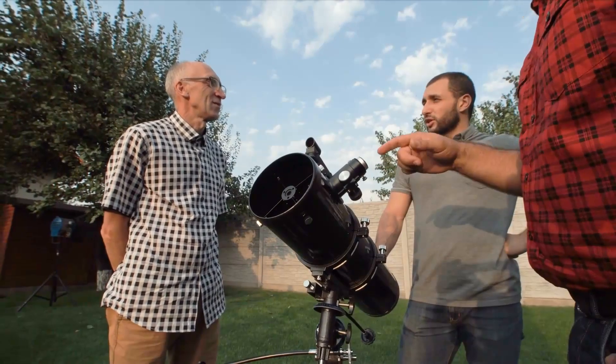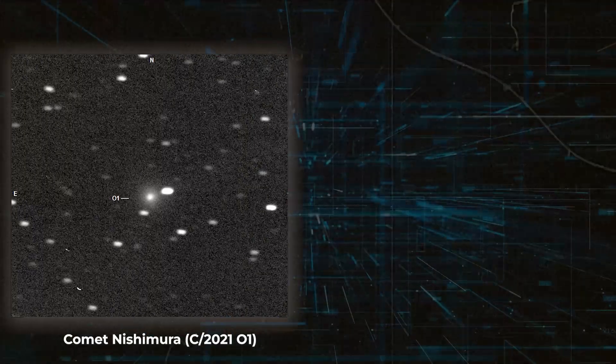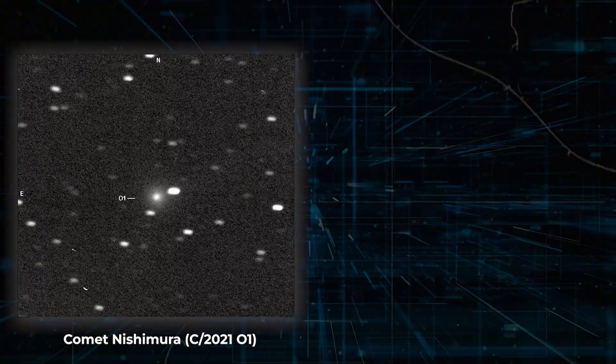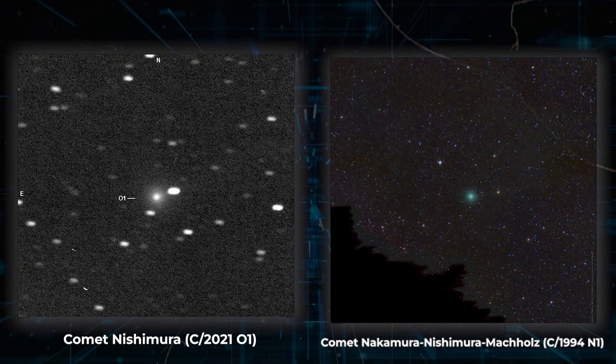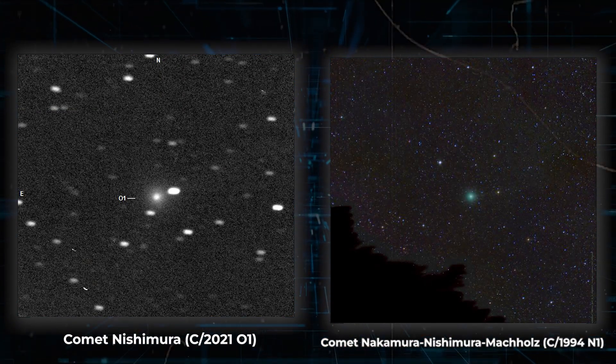His previous two discoveries of comets were Comet Nishimura C/2021-01 and Comet Nakamura-Nishimura McColls C/1994N1.